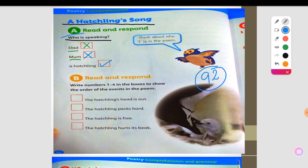So here we have this word right here: Think about who I is in the poem. So here it's a hatchling. It was the one who is speaking here while it was inside its egg. Done? Any question? That's great. So let's go.